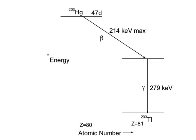Since the binding energy of the K-electrons in 203-Tl amounts to 85 keV, the K-line has an energy of 279 minus 85 equals 194 keV.